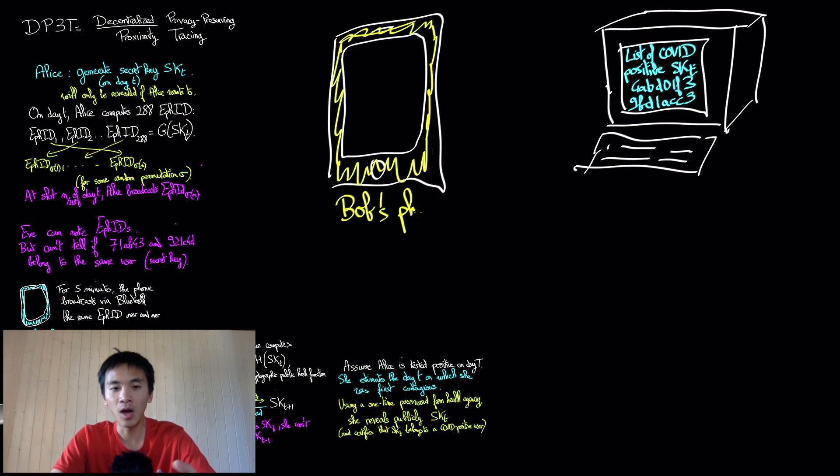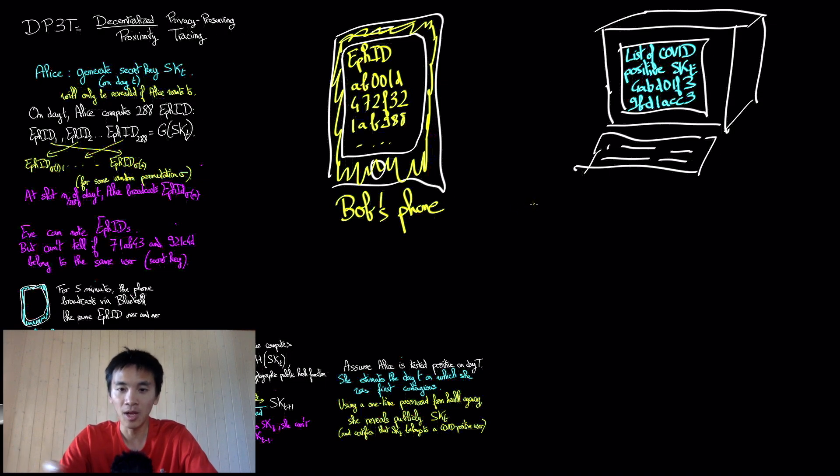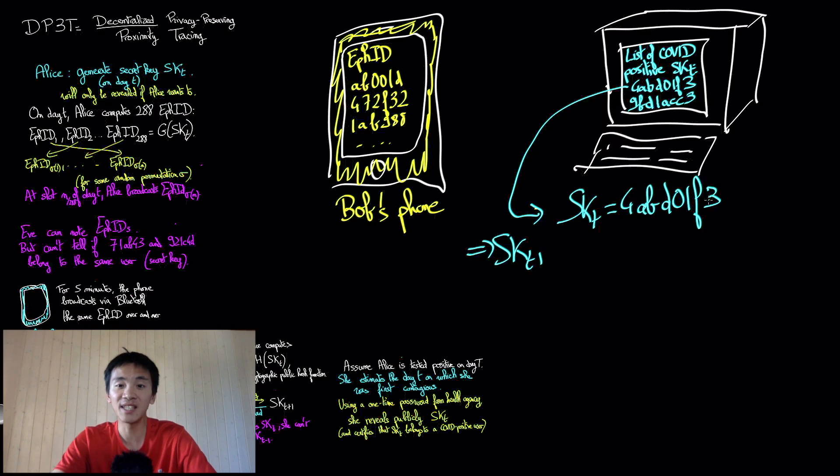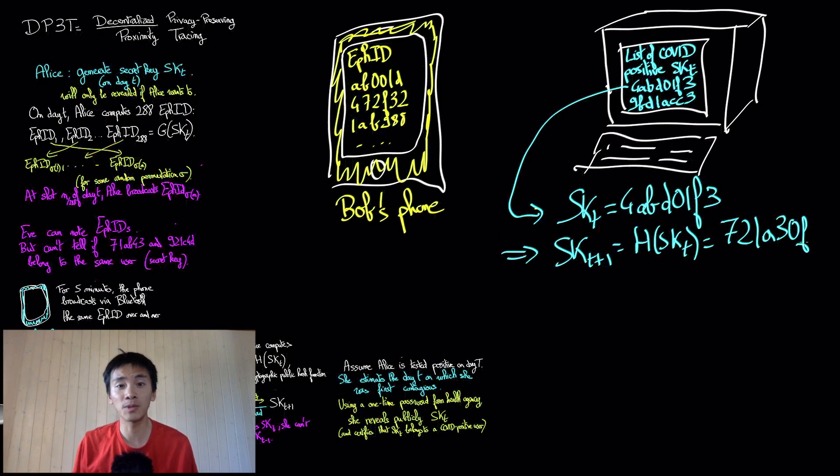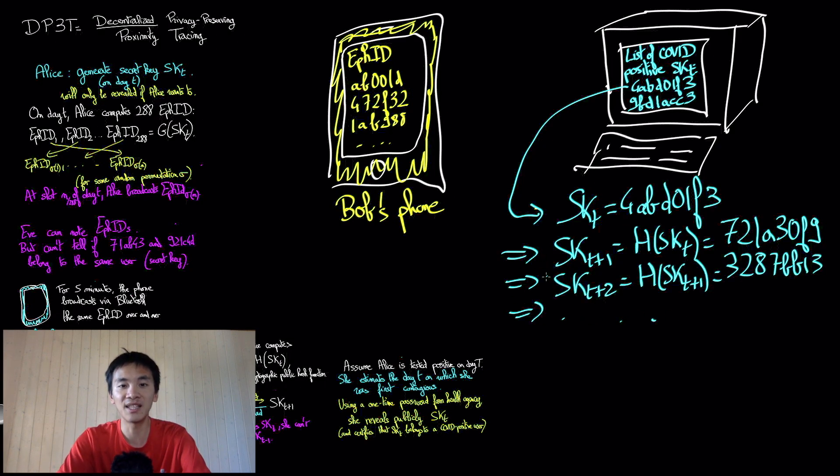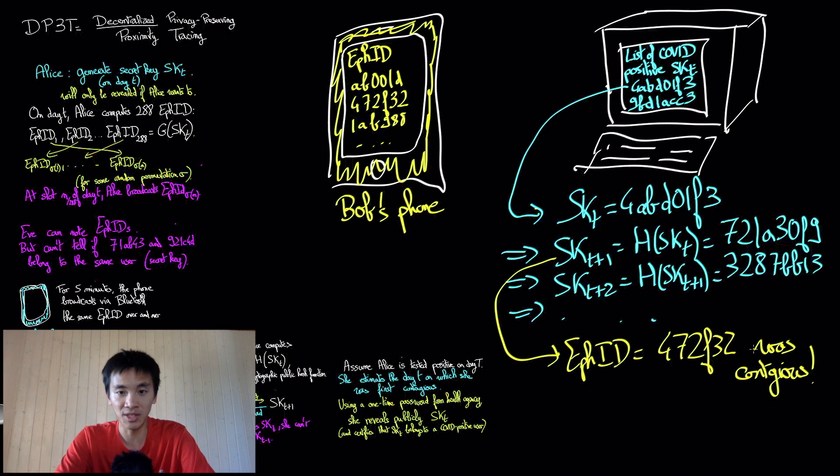Every now and then, other DP3T users, like Bob, will then download the list of secret keys published on the server. Using this list, Bob can now check if he has been in contact with contagious DP3T users. Indeed, given a published secret key SKT, Bob can compute all posterior secret keys SKT plus 1, SKT plus 2, and so on until SKT. And then, he can compute all ephemeral identifiers associated to these secret keys.